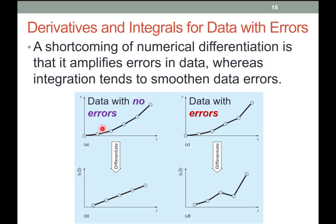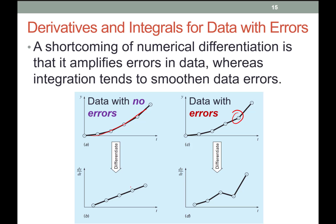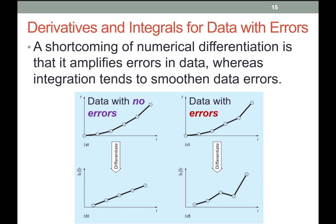Here we see differentiation of data with no errors versus data with some error — mainly one point that is a bit off and doesn't follow the trend. When we differentiate using numerical methods, you can see how far off the derivative becomes because of that slight error in one point. To avoid this, you have to fit the data — not using a polynomial like Lagrange, but using curve fitting to get something more smooth, and then differentiate that.